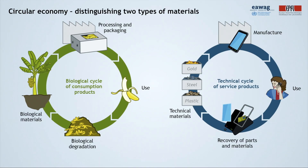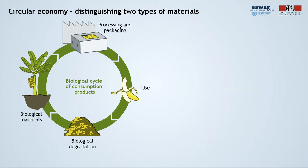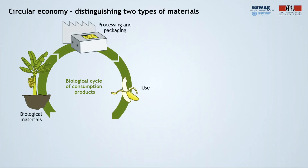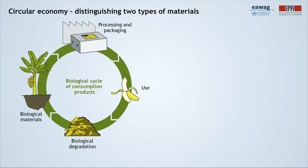For materials to be recovered and returned to the next cycle of production, they need to be clearly defined. In circular economy, materials can be defined either as biological materials or technical materials. Biological materials are used to make the so-called consumption products, which get consumed during use, such as soap or shampoo, or wear off during use, such as clothes or shoes. These are designed to be safe for human health and the environment, and as such, they can safely return to the natural biological cycle. Here we have an example of biological material: food.